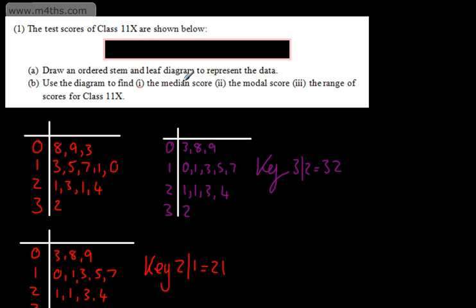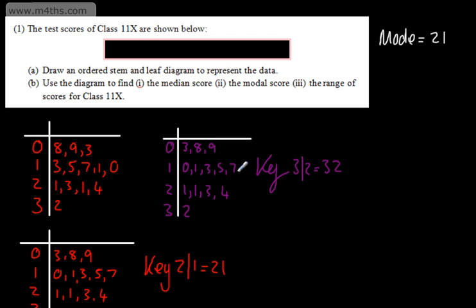I'm going to look at the modal score and the range first. The mode is the number that occurs most frequently. Here is a big mistake students make — they see two 1s together and say that must be the mode. The mode is 21, because 2 | 1 = 21. If you've got more than one mode, write it down — for example, if we also had a 17, we would have two modes: 17 and 21.